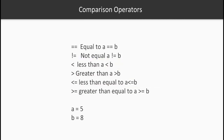For less than or equal to: if you have 5 and 5, then 5 <= 5 is satisfied because one part — the equal-to part — is true. Similarly, 5 >= 5 also satisfies because of the equal-to condition. There are many situations where you need to use these operators.